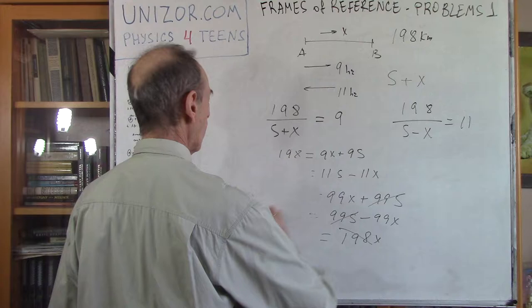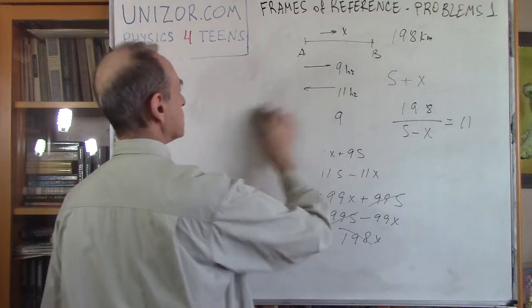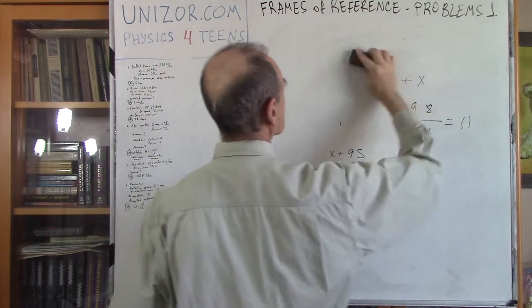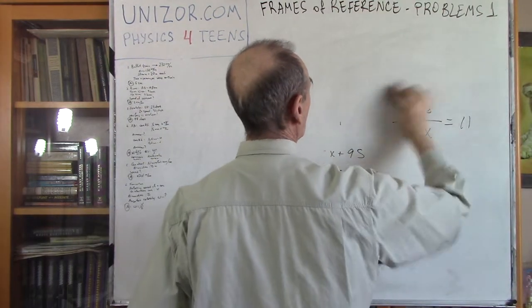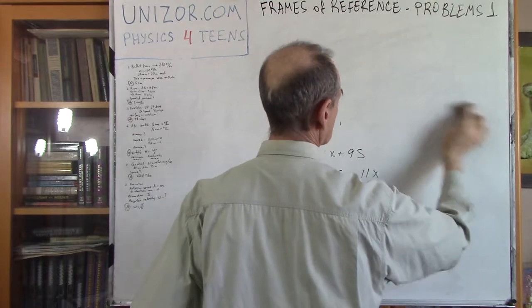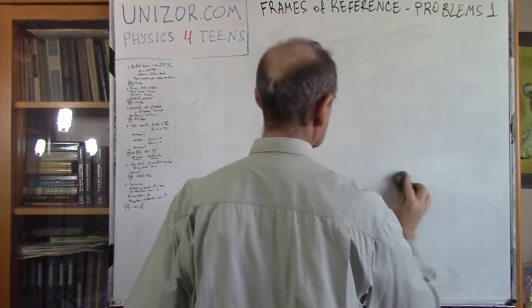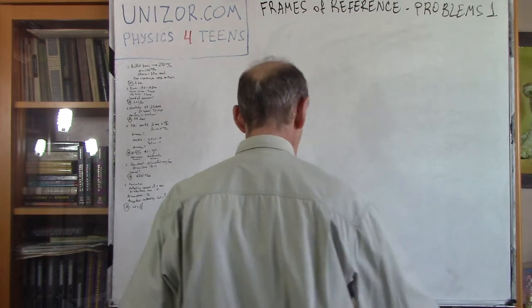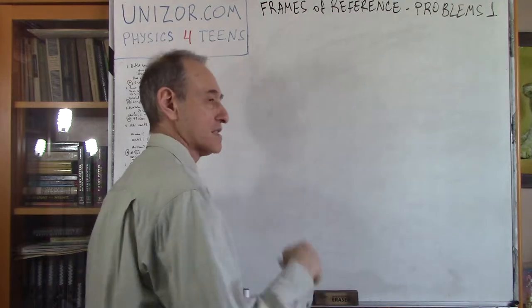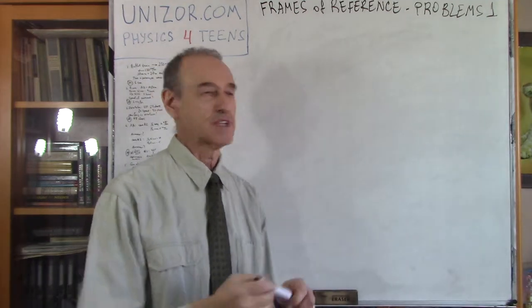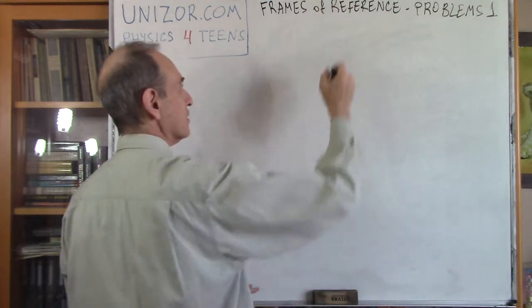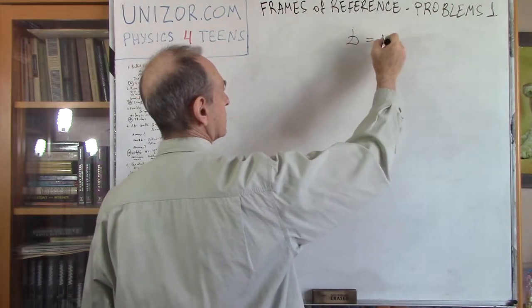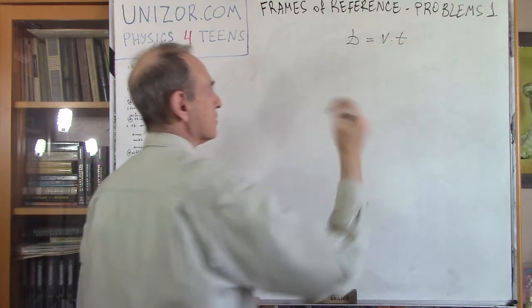Basically, all these problems are fairly easy. It's all distance divided by time to get speed, distance divided by speed to get time, or speed multiplied by time equals distance — this formula can be used in all the different variations, whatever is necessary to get the answer.